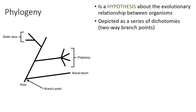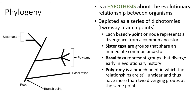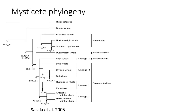A phylogeny is a hypothesis — it's not set in stone. It's based on available information and subject to change. It is depicted as branching diagrams, usually dichotomous, meaning two branches at each split. If there are more than two branches at a branch point, it's called a polytomy — meaning the relationship among those branches is unclear. A basal taxon is one that branched off early in evolutionary history. Sister taxa are two branches directly next to each other on the phylogenetic tree, and branch points represent the common ancestor and where lineages diverged.